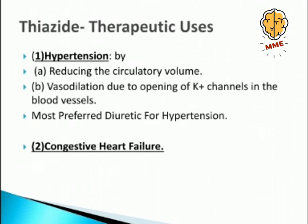Thiazide therapeutic uses: First is hypertension — the most important one. It manages hypertension by reducing circulatory volume (through increased urine production) and by vasodilation due to opening of potassium channels in blood vessels. Among diuretics, thiazide is the most preferred for hypertension. Second is congestive heart failure — by increasing urine production, it reduces circulatory volume, reduces workload on the heart, and provides symptomatic relief.